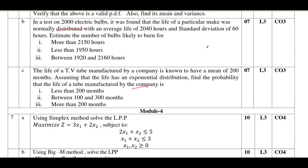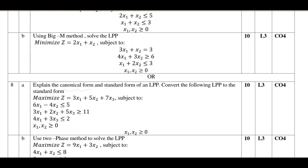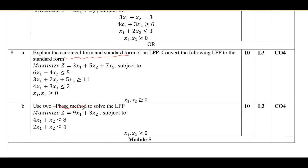Moving on to Module 4, which is very much easier compared to earlier modules — it is linear programming. If you solve problems on linear programming, you can go with only one form. You can consider the canonical form or the phase method. Definitely one problem will be there on canonical form or the phase method — choose any one method and you can score minimum 10 marks from this module. If you study both methods, you can score 20 out of 20.